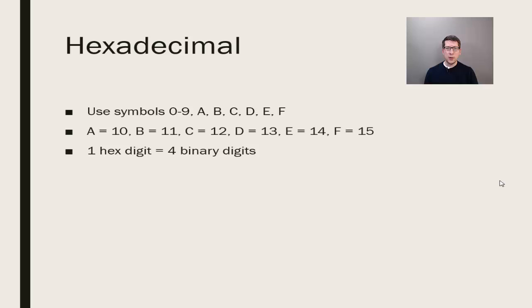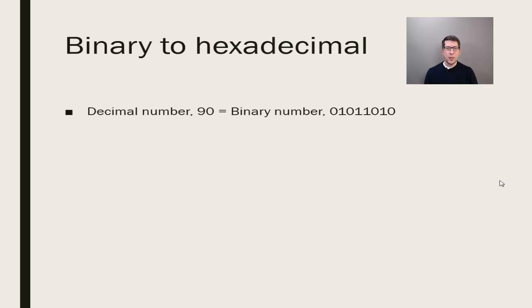As an example, consider the 8-bit binary representation of 90. Here we have binary 01011010. Break this into two sets of 4 and code each using hexadecimal. The first set is 5. The second set is 10 or A. We can represent the number 90 as 5A in hexadecimal.